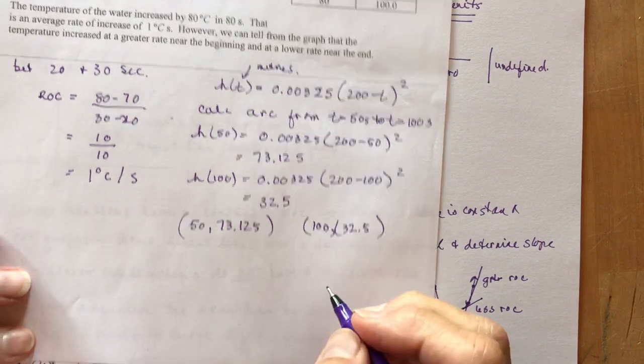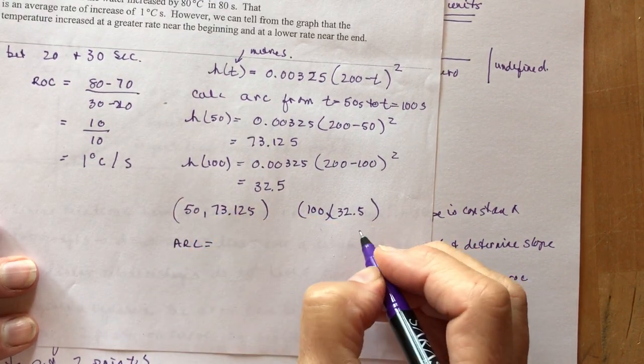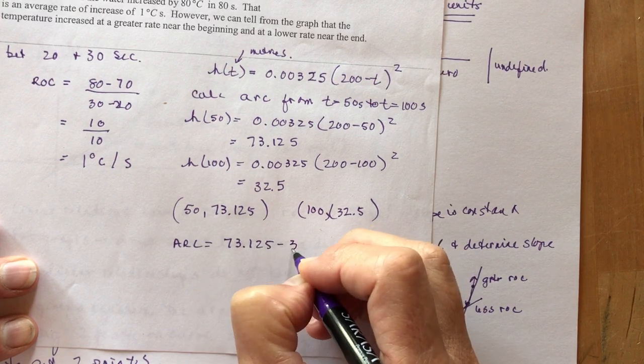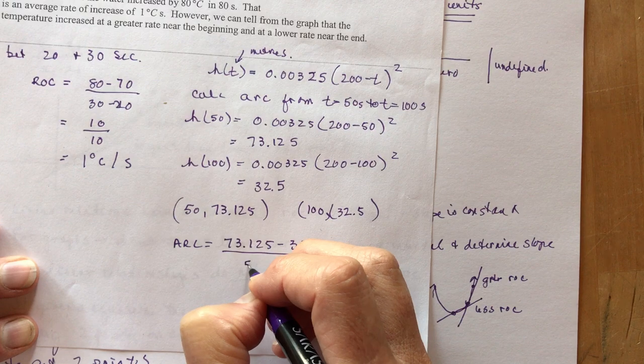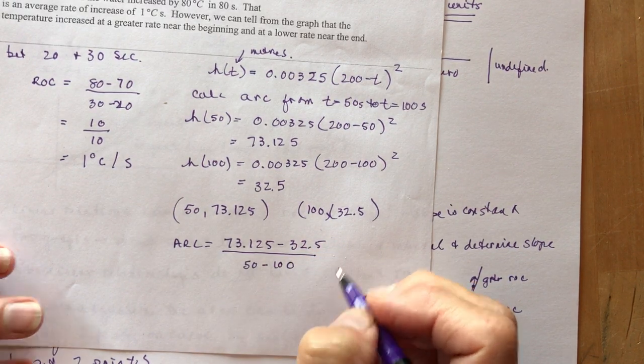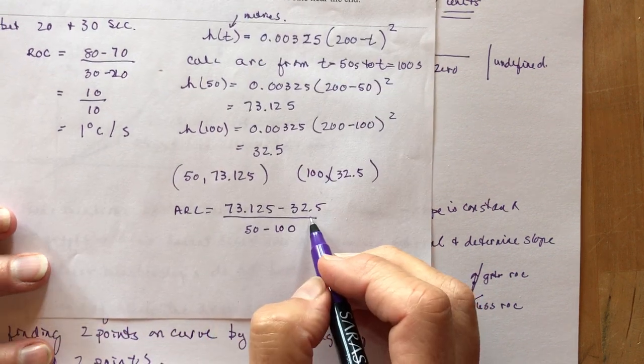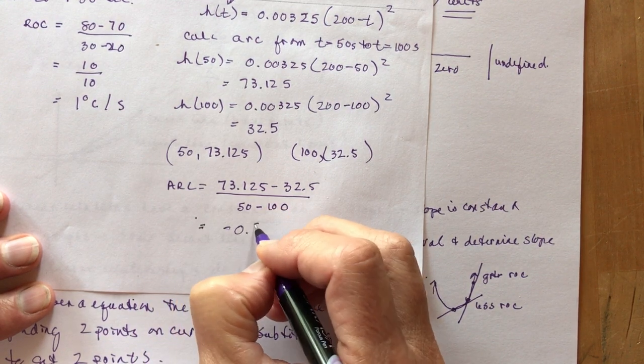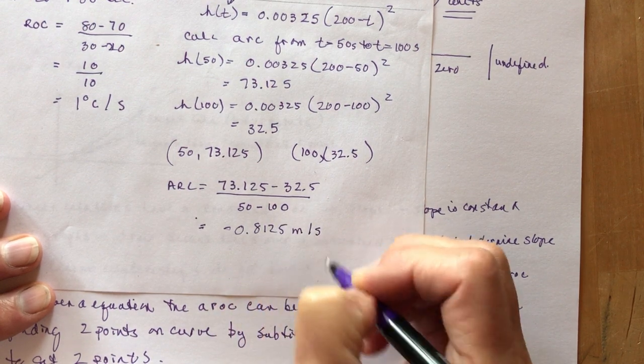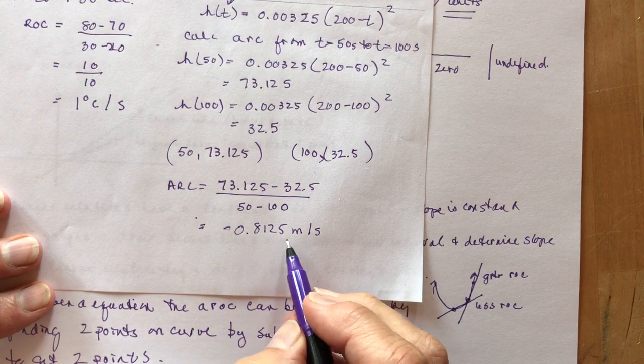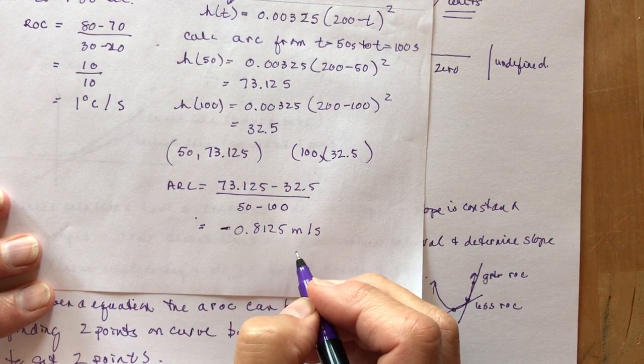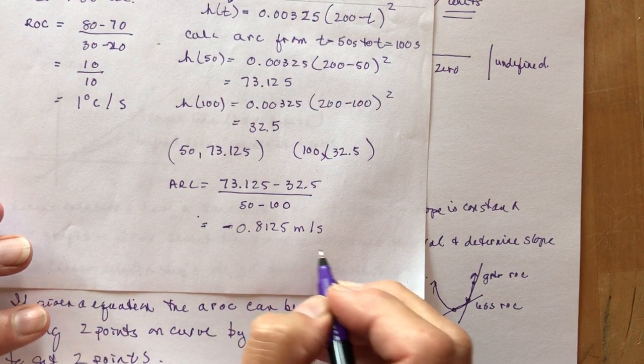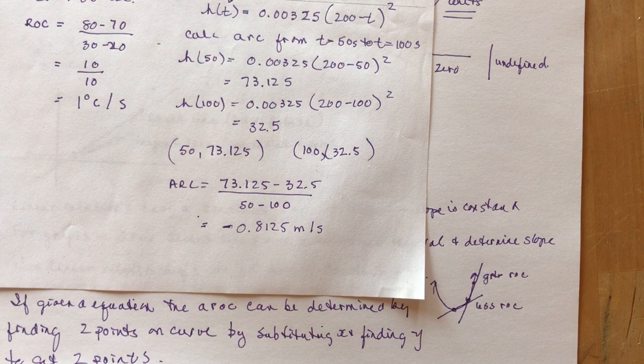And now all I have to do is find the average rate of change. So I'm going to say the average rate of change, rise over run. So I'm going to do, I think I'll go, well, it doesn't matter. I think I'll do this one first. So I'm going to 73.125 minus 32.5. And I'm going to divide it by 50 minus 100. Now you can probably guess my answer is going to be negative, right? Because on the top I have positive, bottom's going to be negative. And so when I divide that all out, I get approximately minus 0.8125 meters per second. So that means that it's going down. The height is decreasing, right? So you don't say decreasing at a negative amount. You would just say it's decreasing at 0.125 meters per second, or the rate of change is negative 0.125 meters per second. Make sure you write it out properly.